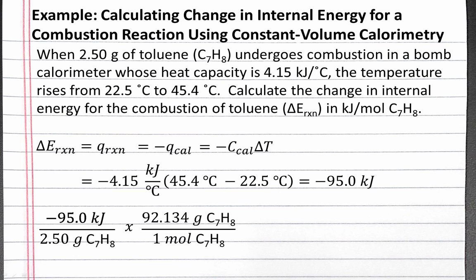By using our molar mass of toluene, we can convert from grams to moles of toluene, and our units will be kilojoules per mole of toluene. Performing this calculation, we get negative 3500 kilojoules per mole of toluene.